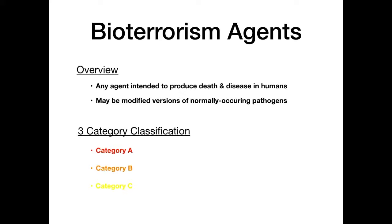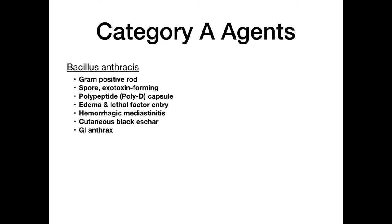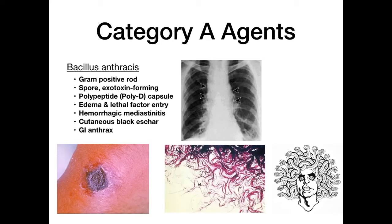Starting with category A, let's quickly review the agents you should already be familiar with. The first is anthrax — Bacillus anthracis — a gram-positive, spore-forming, exotoxin-forming rod with a poly-D capsule. It allows edema and lethal factor entry into the cell, causing hemorrhagic mediastinitis or a cutaneous black eschar, and GI manifestations. Key images: the black eschar, the widened mediastinum, and the medusa head appearance under low-power microscopy. Medusa head equals anthrax.